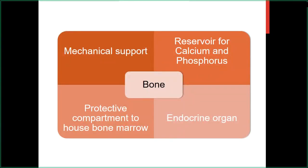As endocrinologists, we all know that bone really plays much more of a role than simply providing mechanical support to the body. It's a highly specialized, dynamic connective tissue, and in addition to serving as the body's major reservoir for calcium and phosphorus, more recently it's been recognized as a true endocrine organ. It plays major roles in renal phosphate handling and even in glucose metabolism, via its production of both FGF23 and osteocalcin.